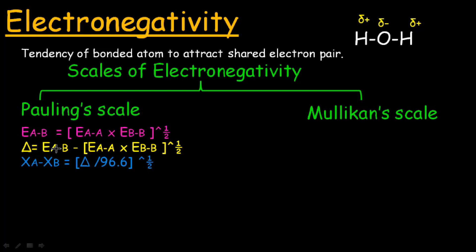If you know the bond energy of the product, you can find the value of delta. After finding the value of delta, divide it by 96.6 and then take the square root. You will get the difference in electronegativity between atoms A and B.